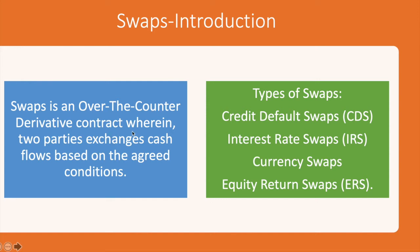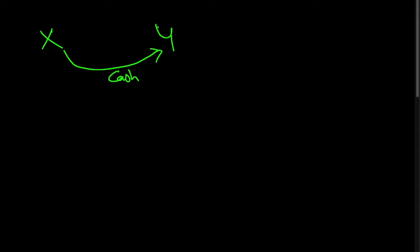A swap is an over-the-counter (OTC) derivative contract wherein two parties exchange cash flows based on agreed conditions. X will give away some cash and Y will give away some cash, and between them they will make profit and loss. Once you understand the types of swaps, it will become clear.